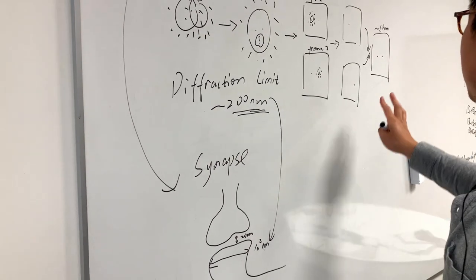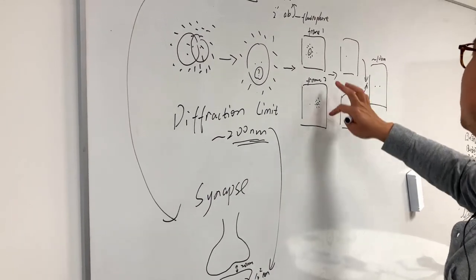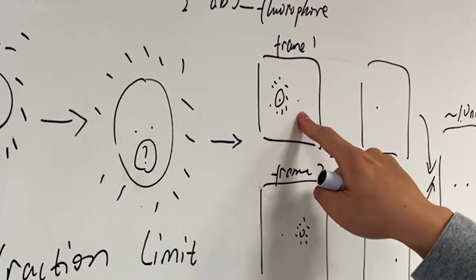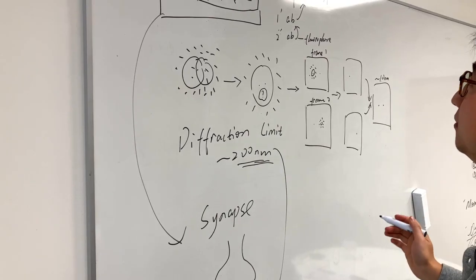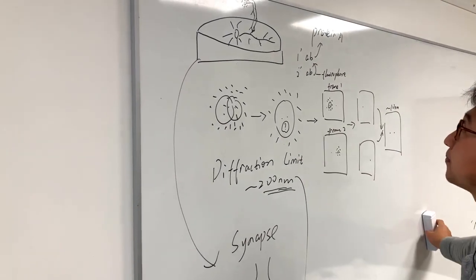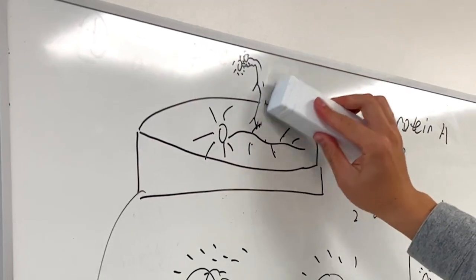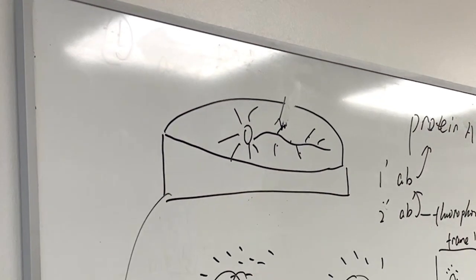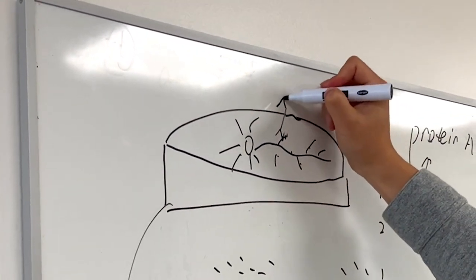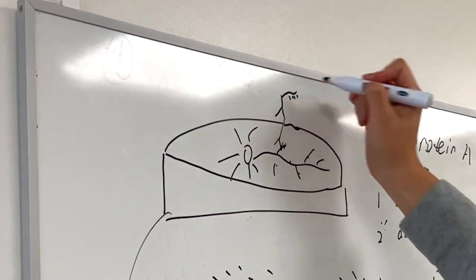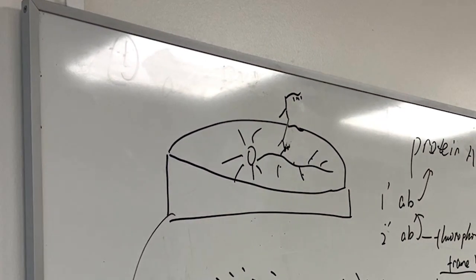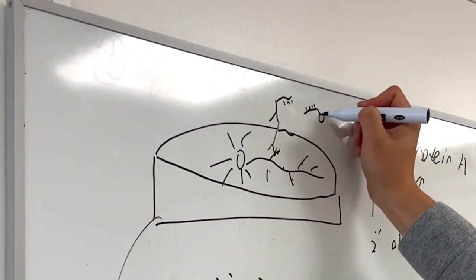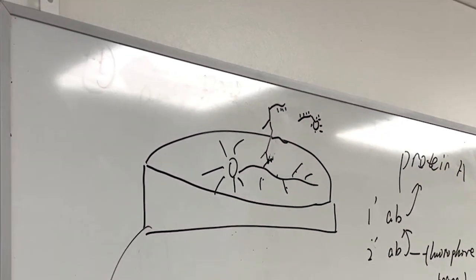Now, coming back to the methodology of how we achieve this kind of blinking, so that in one frame this molecule fluoresces and in another frame another molecule fluoresces. One way to do this is instead of putting a fluorophore onto an antibody, our secondary antibody is instead attached to a DNA oligo.